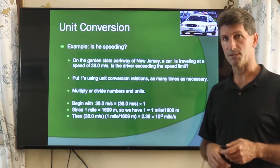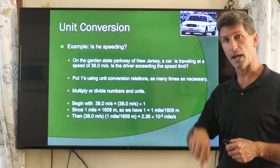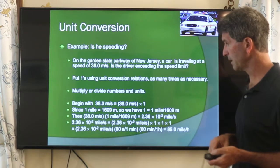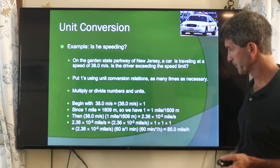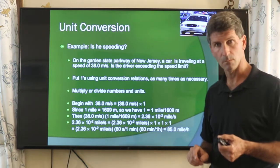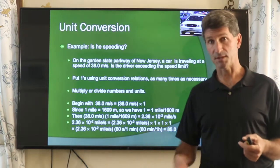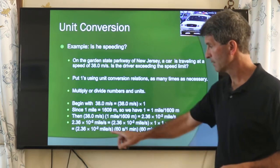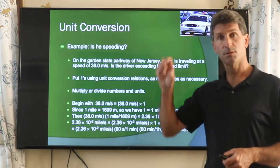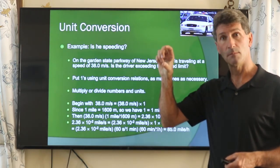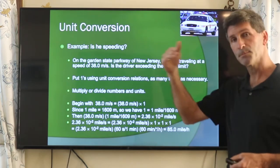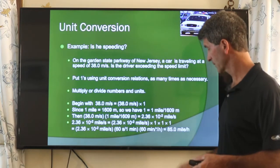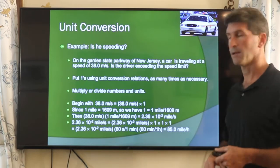I have seconds in the denominator, so I need to convert that to hours for miles per hour. I come up with the equivalence between seconds and hours: there are 60 seconds in a minute and 60 minutes in an hour, so 60 times 60 is 3,600 seconds per hour. I multiply by something with seconds in the numerator so they cancel out. Hours goes into the denominator — it's per hour. I do that conversion and I end up with 85 miles per hour.